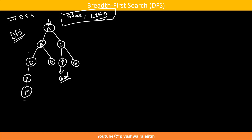That is how DFS works. But in the case of BFS, breadth first search, we follow a queue data structure — that is the first-in-first-out principle, FIFO.